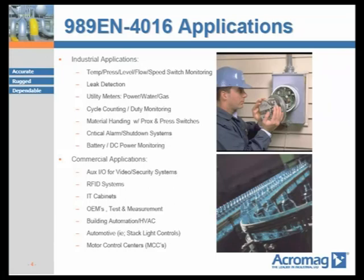Other markets include automation such as material handling using proximity or pressure switches, critical alarm systems, valve solenoid control, or 5V, 12V, 24V DC battery monitoring and control systems. Commercial applications include using the 989EN as auxiliary discrete I/O for remote audio-visual control, video security surveillance, and RFID systems. It can also be used within IT cabinets to remotely monitor or reset servers, or to detect if a cabinet door is opened or closed. The low-cost commercial I/O device is ideal for OEMs in semiconductor manufacturing, building automation, and automotive markets, as well as motor control center monitoring and test equipment manufacturing.